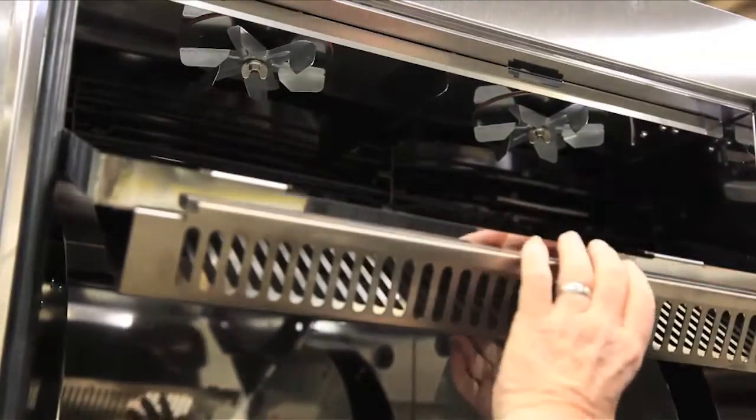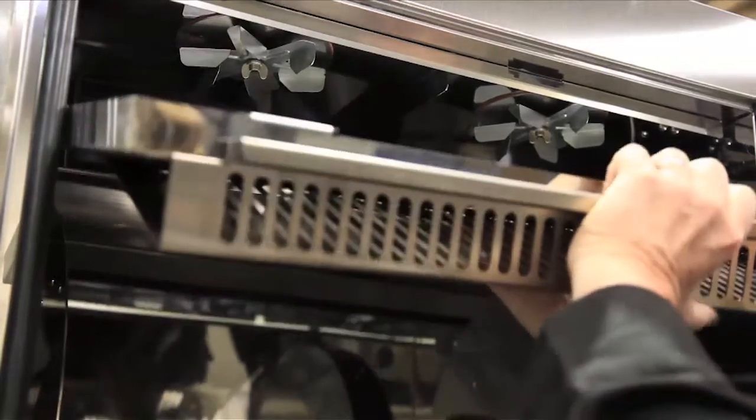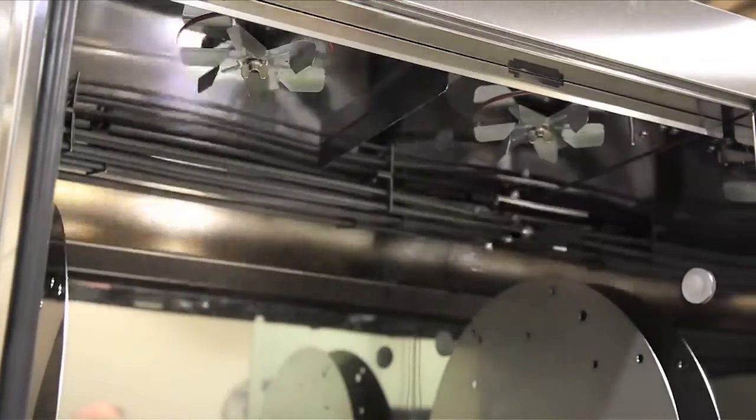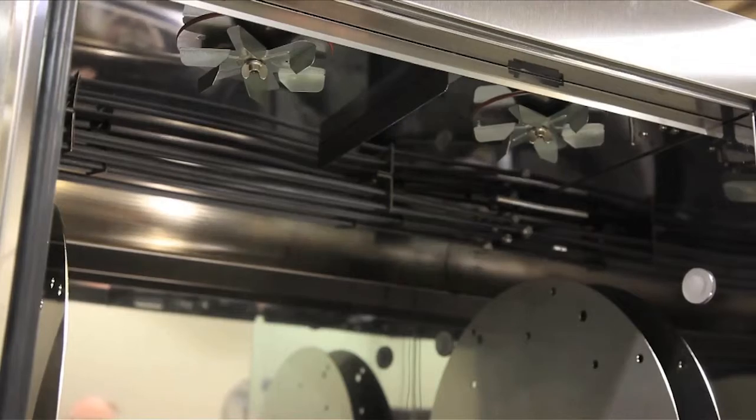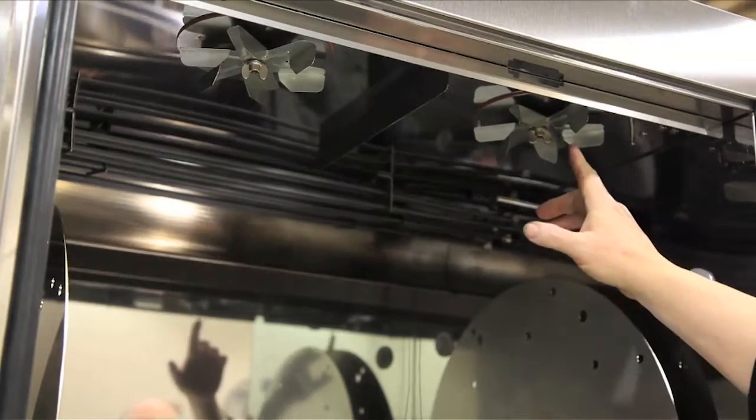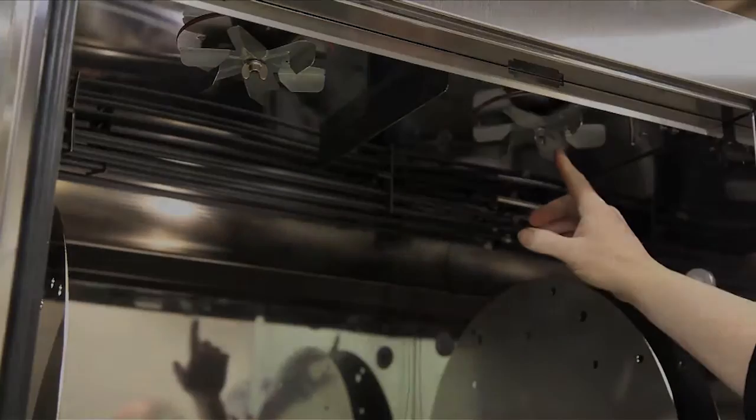Removing the fan cover and dropping down. This needs to be done every night. And now you've broken down the interior of the oven completely.